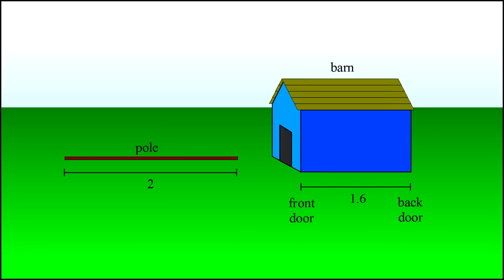Let's refer to the left side of the barn as the front door and the right side as the back door. The right side of the pole we'll call its head and the left side its tail.